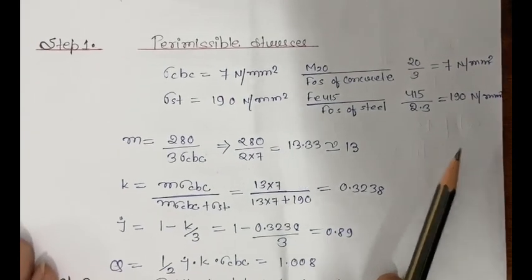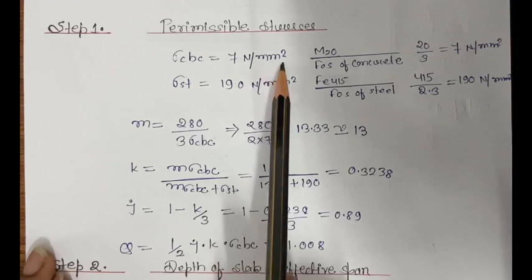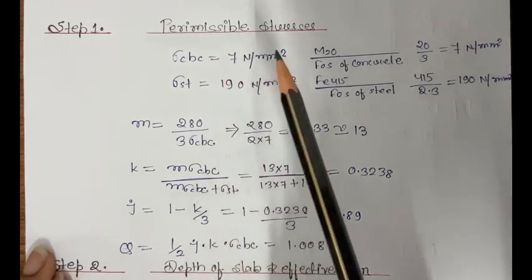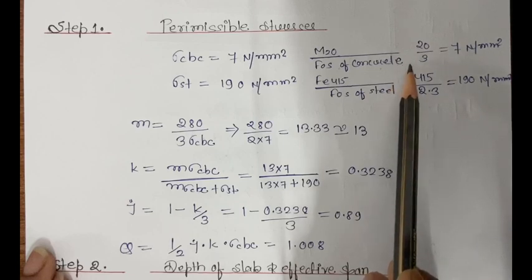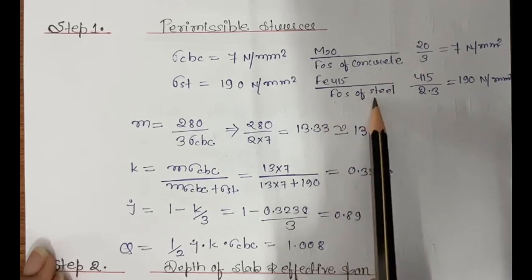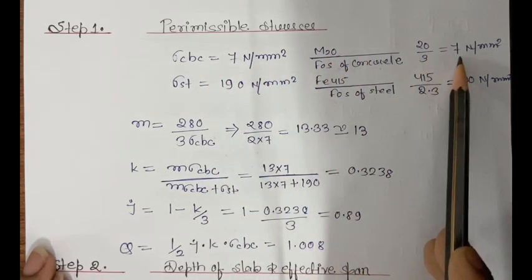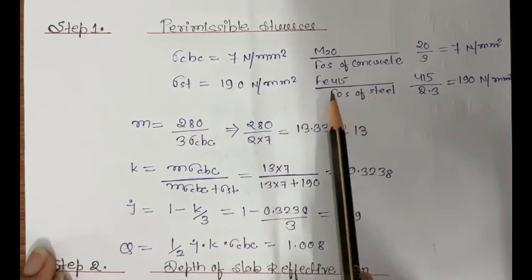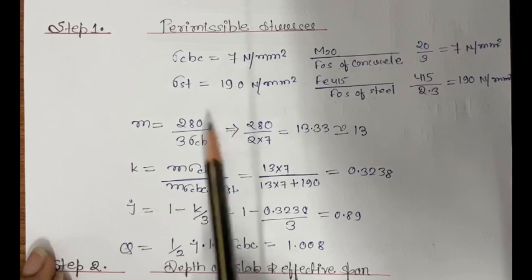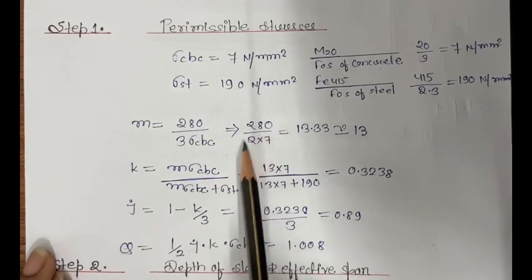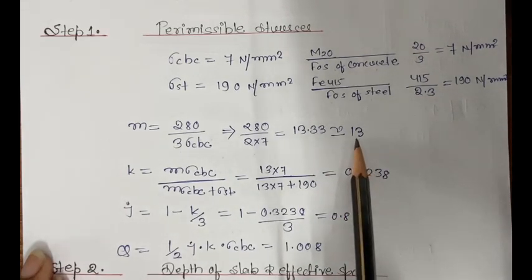In the first step we have to find out the permissible stresses. For permissible stresses, sigma CBC equal to 7 Newton per mm square. This comes from M20 divided by factor of safety of concrete in WSM, which is 3, giving 7. In WSM, factor of safety for concrete is 3 and for steel is 2.3. Modular ratio equals 280 divided by 3 sigma CBC, that is 280 divided by 21, giving 13.33, so modular ratio is 13.